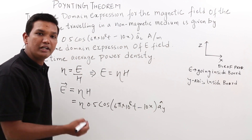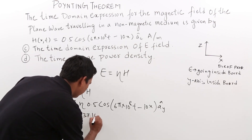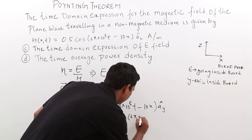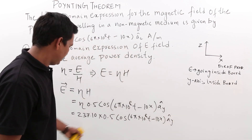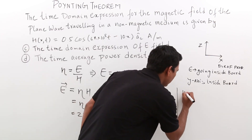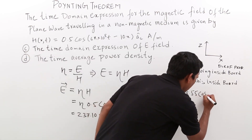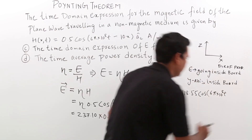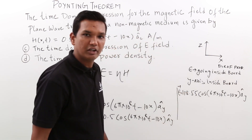The electric field is in the y-hat direction. The intrinsic impedance eta was already found to be 237.10. So the electric field is: E = 237.10 × 0.5 cos(6π × 10⁸ t − 10x) ŷ. Simplifying, we get E = 118.55 cos(6π × 10⁸ t − 10x) ŷ, and this is the electric field expression.